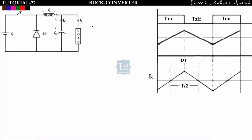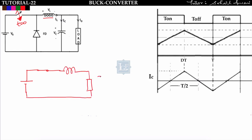This is the circuit diagram of the buck converter explained in the previous lecture. It has one inductor, one capacitor, one freewheeling diode, and a switch connected to supply voltage Vs. When I close the switch at t = 0, the supply voltage charges the inductor, the switch is short-circuited, and the freewheeling diode becomes open-circuited.